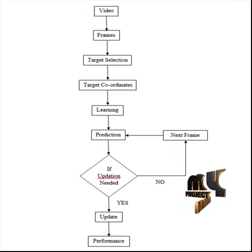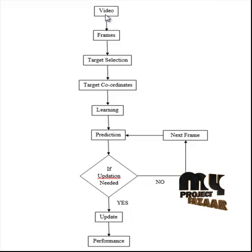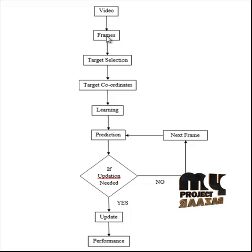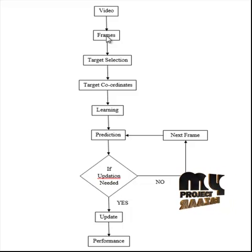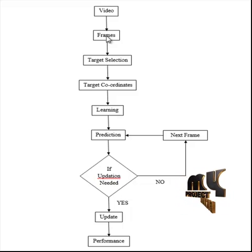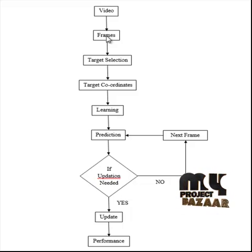Let us see the flow of the process. Initially, the video is converted into frames. Noise in the frames reduces the quality. Each frame in the video is considered as an image. In order to improve the quality of the images, we normally employ some filtering operators. Median filter is used for filtering.